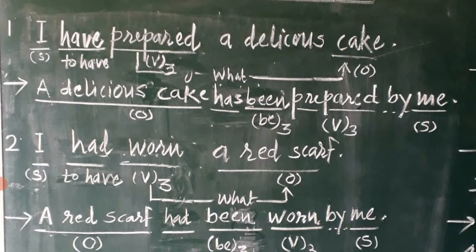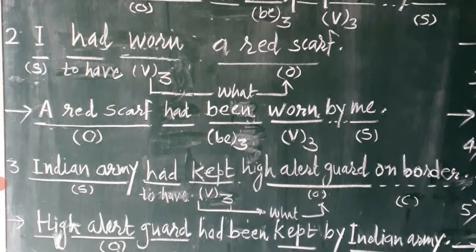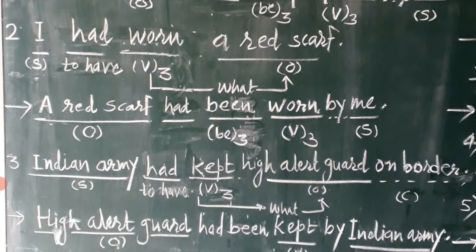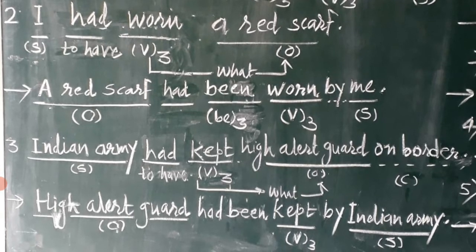'I had worn a red scarf.' Now this sentence follows the same rules. The passive construction is: 'A red scarf' — then 'had' to represent past perfect — then 'be' is converted into 'been' — then the action verb 'worn' as it is, already in past participle form — and finally, subject 'I' is converted into 'me' and attached by 'by.' Result: 'A red scarf had been worn by me.'